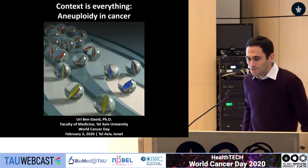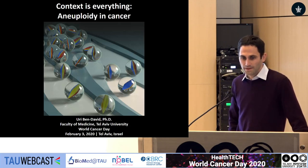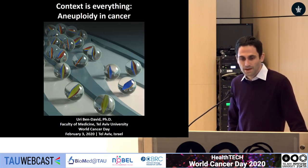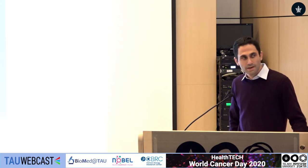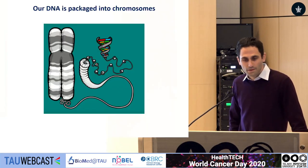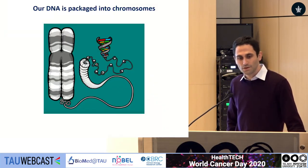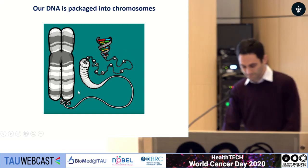Each cell of our body has 3.3 billion base pairs of DNA. And this 2-meter-long DNA needs to fit into a tiny nucleus. In order to do that, our DNA is condensed into structures of DNA and proteins that are called chromosomes.